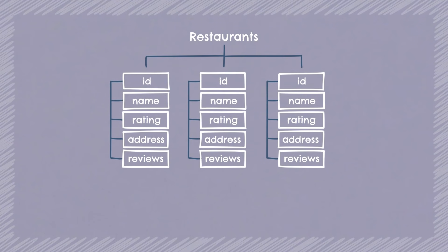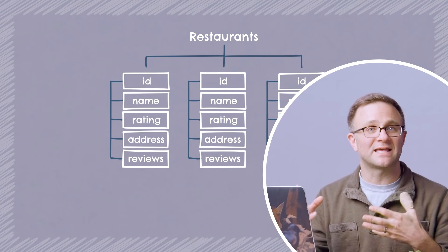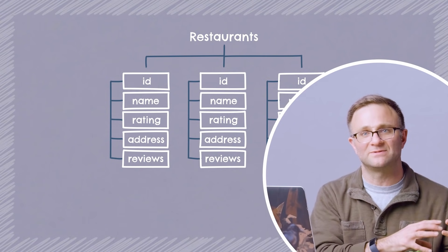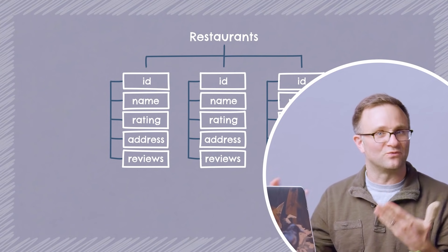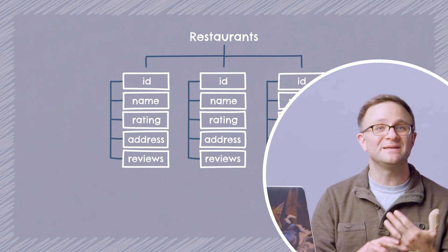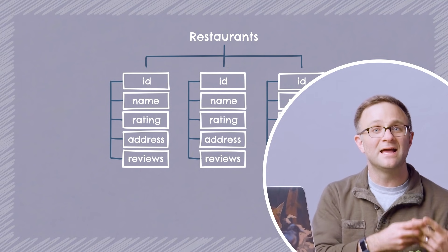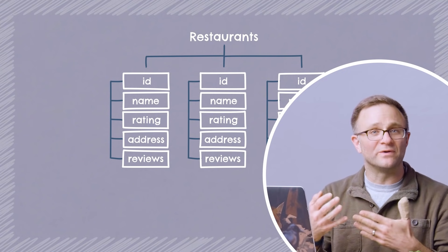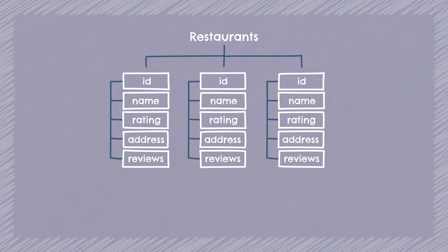So I might have my list of restaurants with objects all containing a name, a rating, and an address, but that's basically by convention. There are no explicit database-level rules that say all these objects have to have the exact same fields or the same types of data. This loosey-goosey approach might seem a little weird at first, but it does have some advantages. A lot of developers like working with a schema-less database because they can easily iterate on their database design by adding or changing fields as needed, and it won't necessarily break anything else.